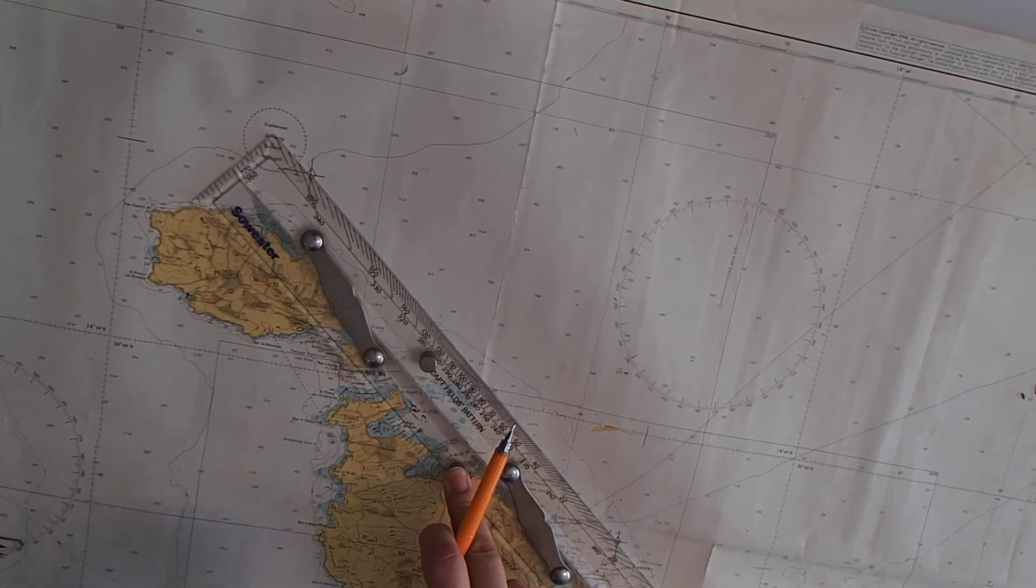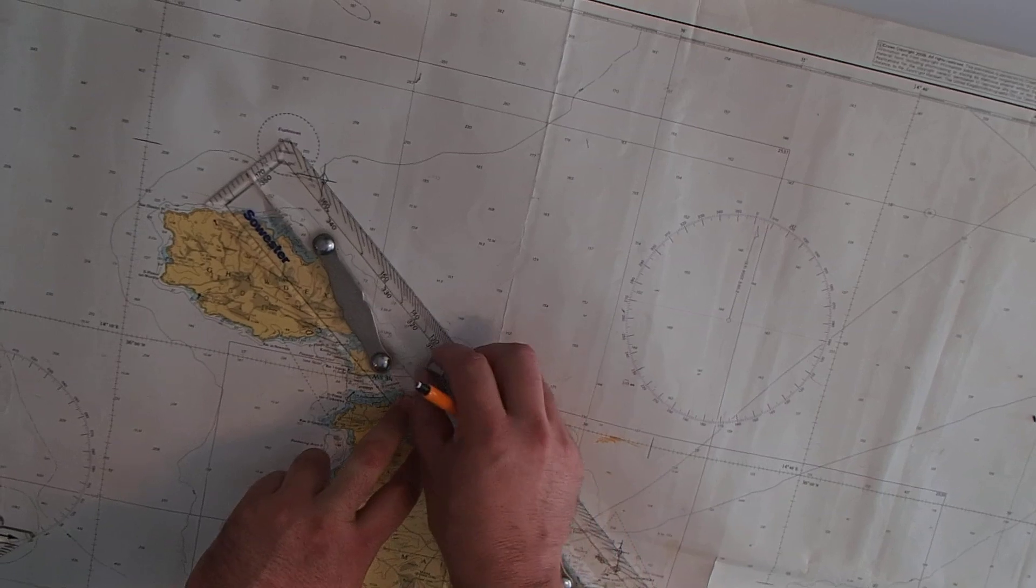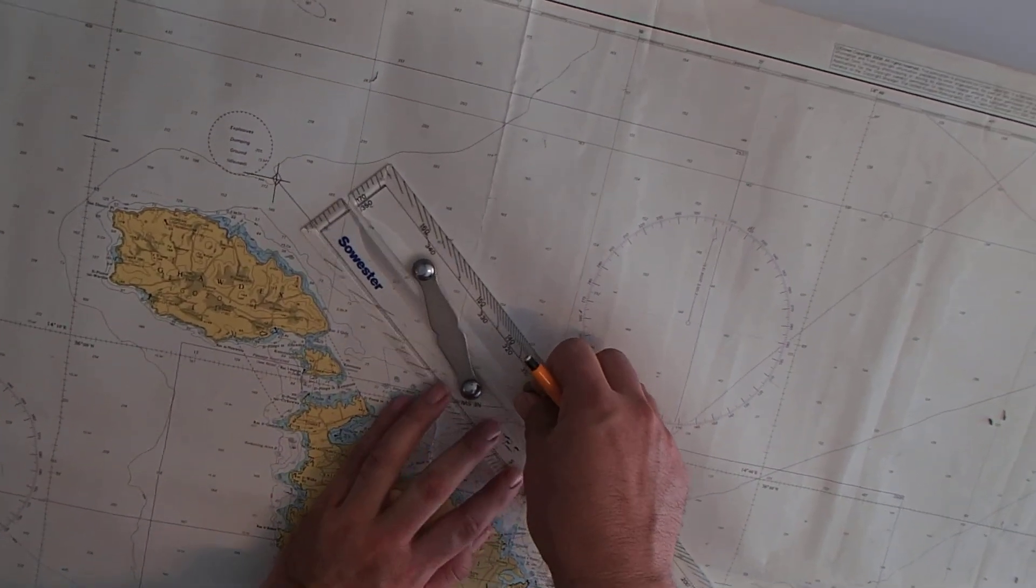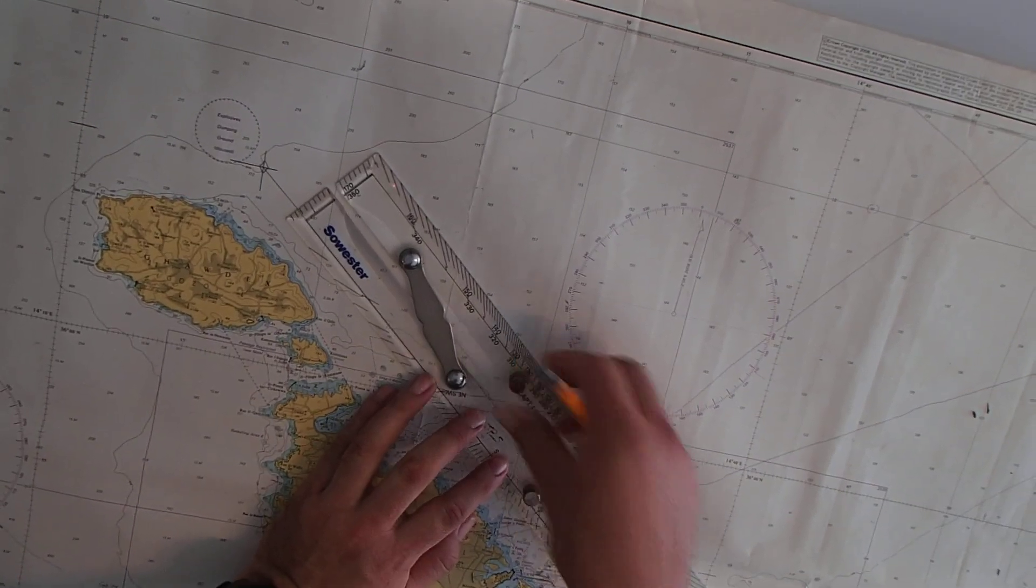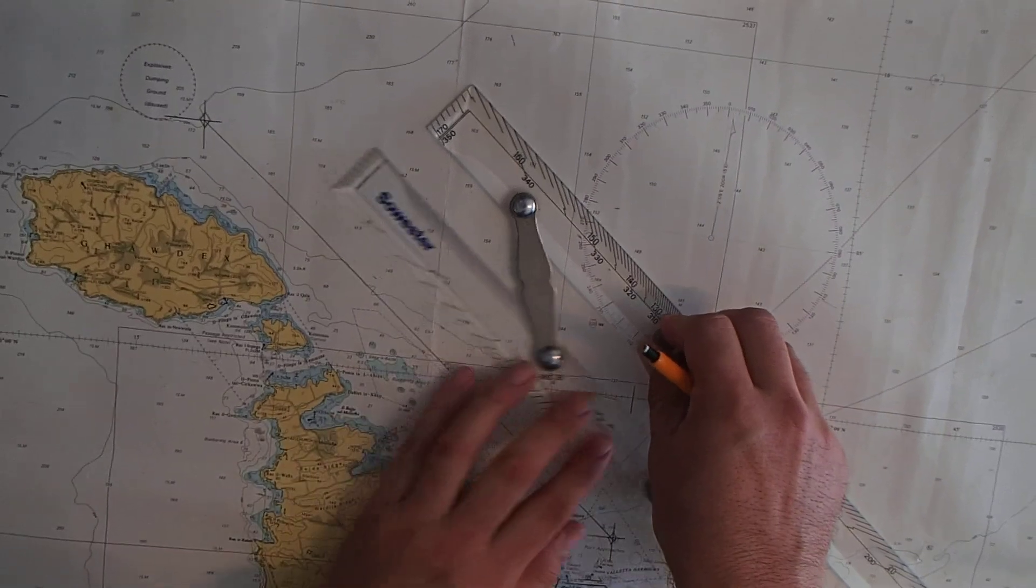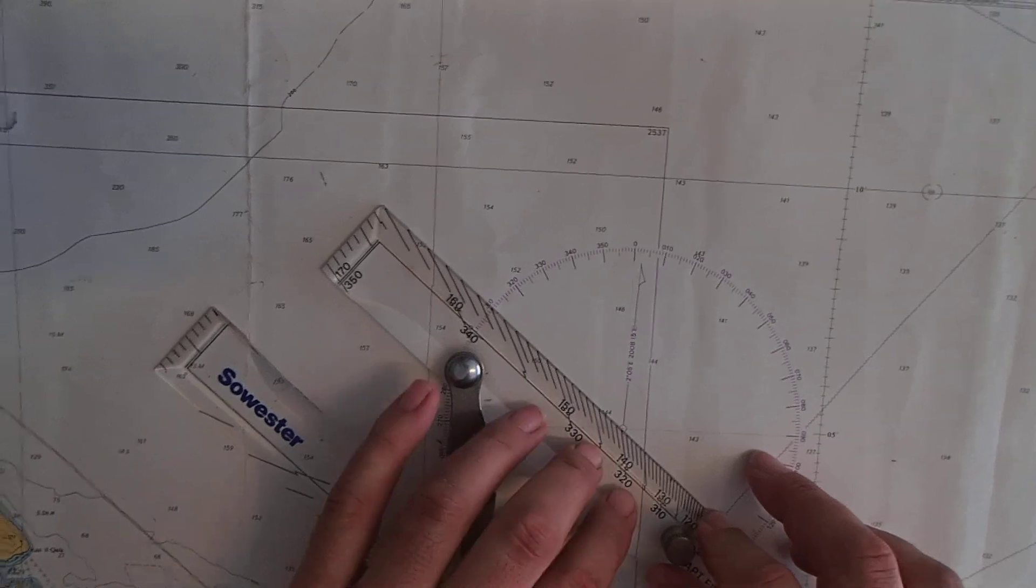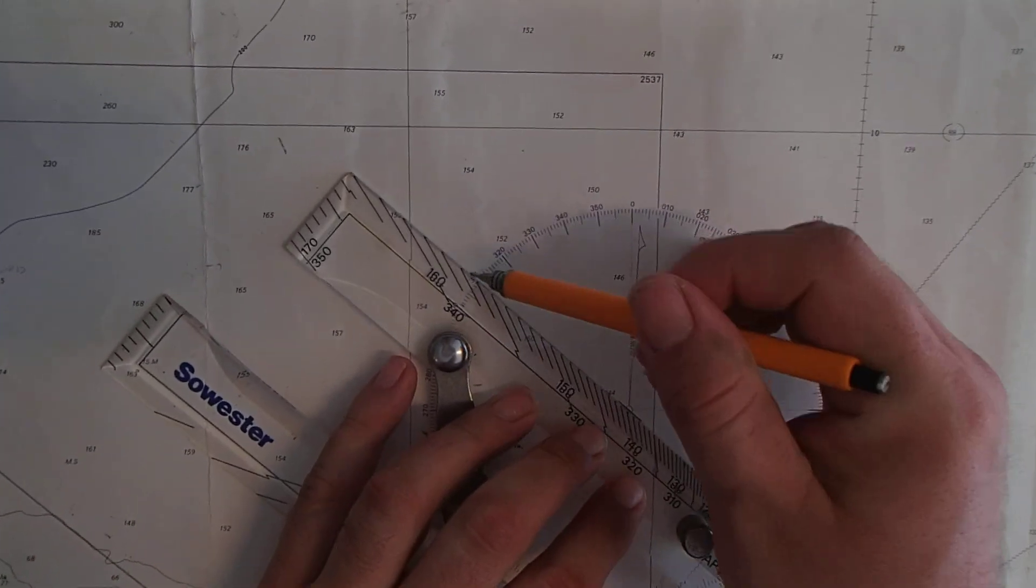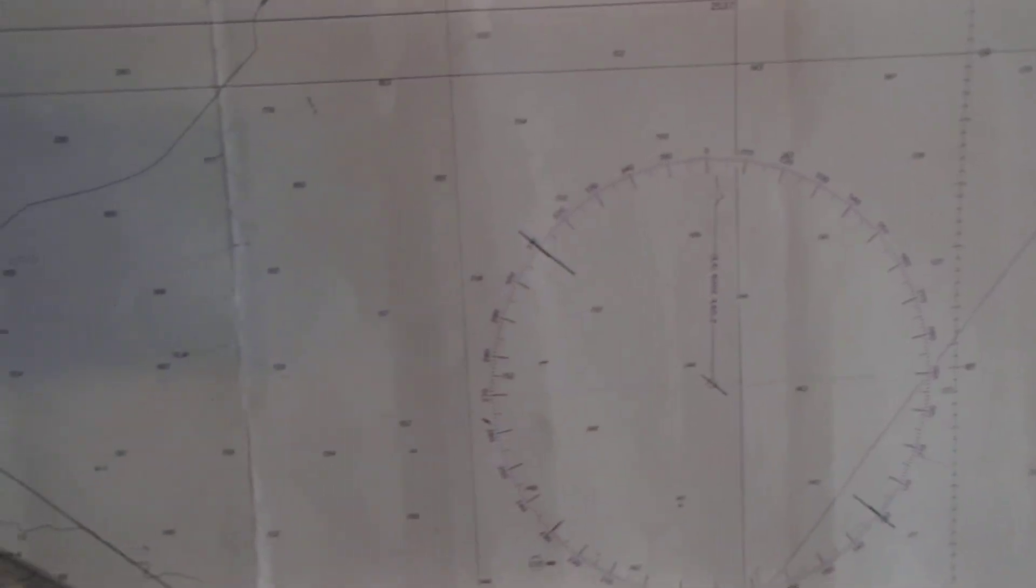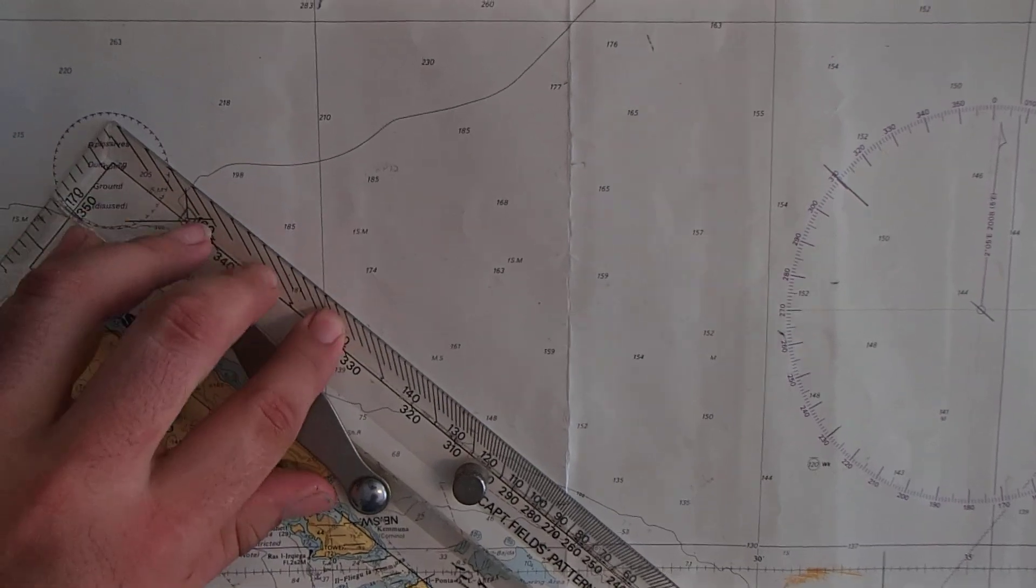Now what is the direction of the course line? By holding the parallel ruler in place and moving our parallel ruler one time, we move over to our compass rose. When we get in the middle we mark the middle on one side, we mark on the other side, we get back here, keep it in line.